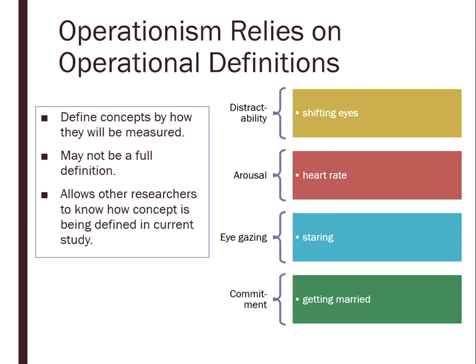The key thing is we want to signal to other researchers how we define the concept in the current study, so they know that while they might think love means wanting to get married, in my study love meant heart rate accelerates when you see your love object. We need to make sure researchers are defining things the same way, so someone doesn't think they're doing a complete replication when they're measuring attraction by commitment while I measured it by heart rate.